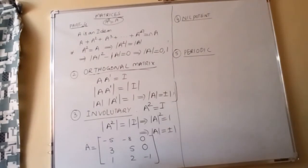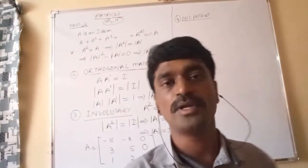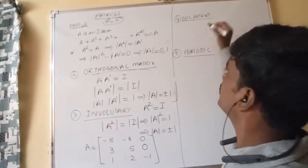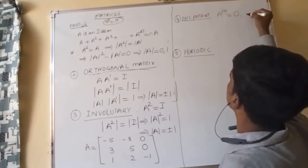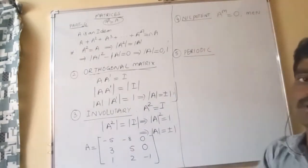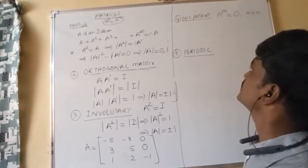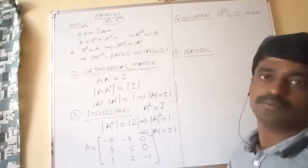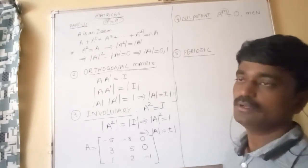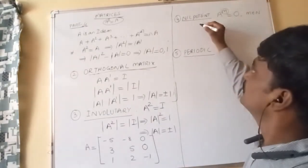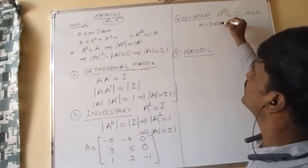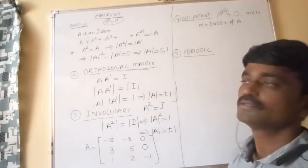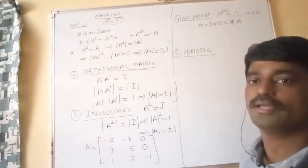Next definition: nilpotent matrix. A square matrix A is said to be nilpotent if A^M equals the null matrix for some natural number M. If M is the least positive integer satisfying A^M = 0, then M is called the index of A.